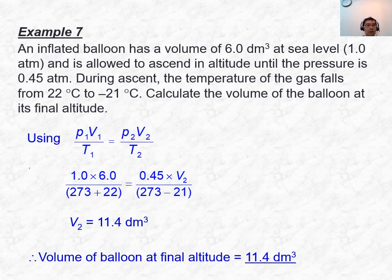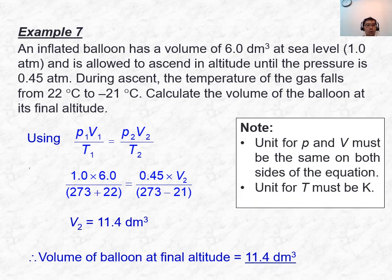For example 7, solve using the ideal gas equation since we are talking about the same number of moles of gases: P₁V₁/T₁ = P₂V₂/T₂. Remember that temperature must be in Kelvin. Substituting values gives the volume of the balloon at the final altitude as 11.4 dm³.